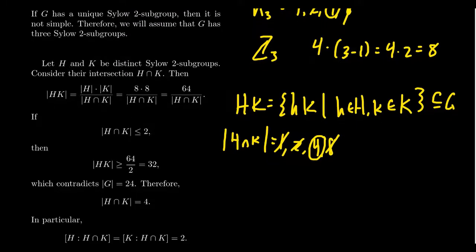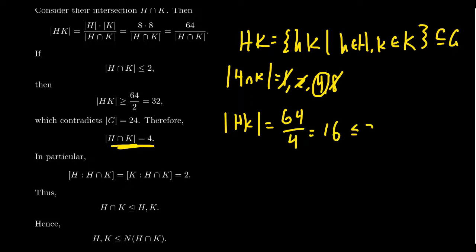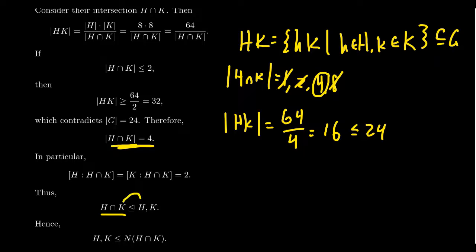As such, we know the intersection is exactly 4. When we consider the size of HK, we get 64 divided by 4, which equals 16. That does fit inside 24. Now I'm going to look at H intersect K as a subgroup of H. H has order 8 and H intersect K has order 4, so the index is 2. The same is also true if you look at H intersect K as a subgroup of K — its index in K is equal to 2. We've proven previously that every subgroup of index 2 is normal inside of that group. Therefore, H intersect K is a normal subgroup of H and also a normal subgroup of K.